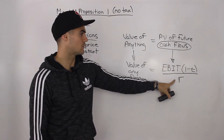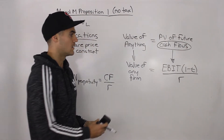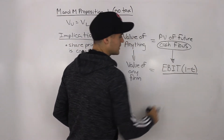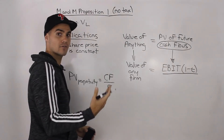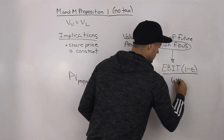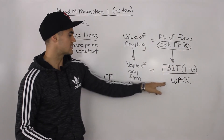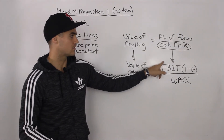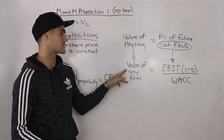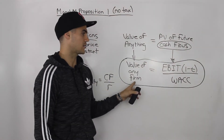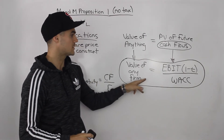We can get more specific about the discount rate. A good representation would be how much it costs the firm to raise capital. On average, that cost is represented by the weighted average cost of capital, the WACC. So instead of r, we're now going to discount these cash flows of the firm by its weighted average cost of capital. That will give us the value of any firm. This formula that I circled is huge in this chapter — super useful, so make sure you take note of it.